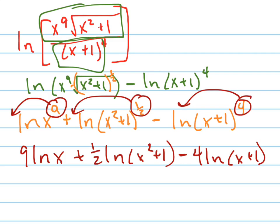All right, the last thing is you want to check: is there anything more I can do? A lot of people make the mistake of thinking they could take this right here and somehow break it up. But you can't, because it's the natural log of a sum — you can't do anything to that. You can't combine it or do anything differently. Now if you were able to factor that — which you can't — but if it was a minus sign, you'd be able to, and then you could break it into a product and do a little bit more.